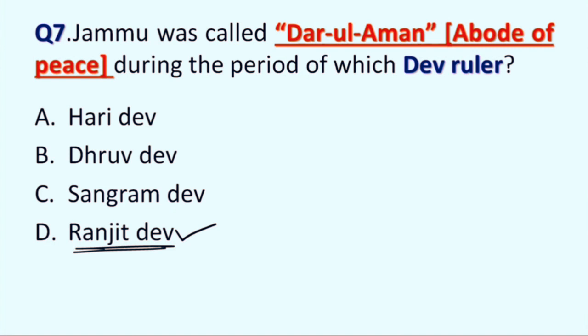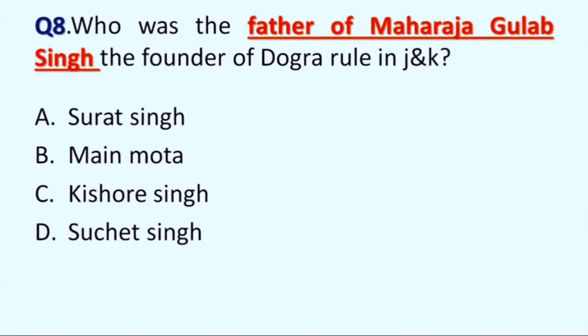Next question is: who was the father of Maharaja Gulab Singh, the founder of Dogra rule in Jammu and Kashmir? Option A: Surat Singh, B: Main Mota, C: Kishore Singh, and D: Suchat Singh. Correct answer is Kishore Singh. Kishore Singh was the father of Maharaja Gulab Singh, founder of Dogra rule in Jammu and Kashmir.